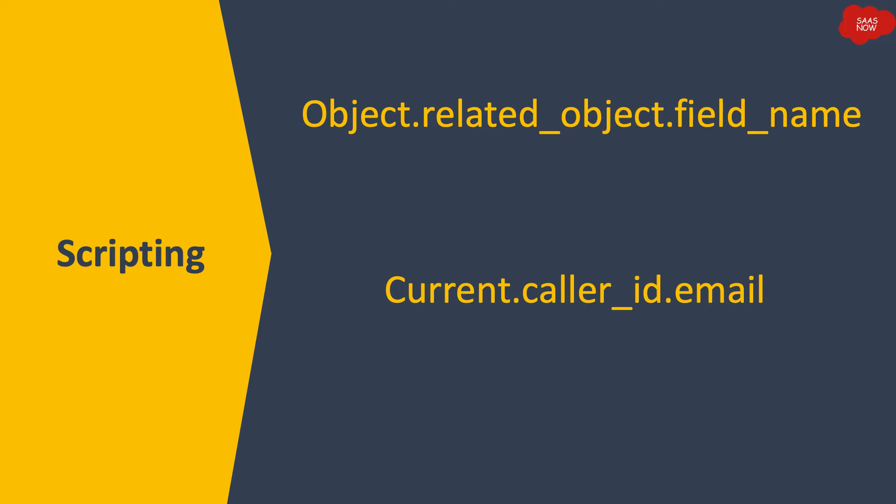You can also use dot walking in scripting. The syntax is: object dot related_object, and then you put the field name — that means the referenced field name. As an example, you can access caller ID email on any incident record. So if you want to access the email of the caller ID — the user who is in the caller field — you use this kind of syntax.